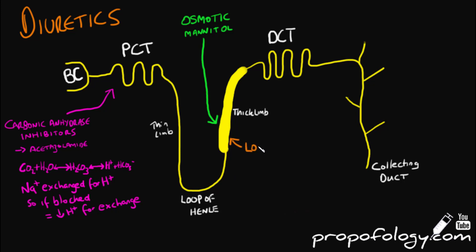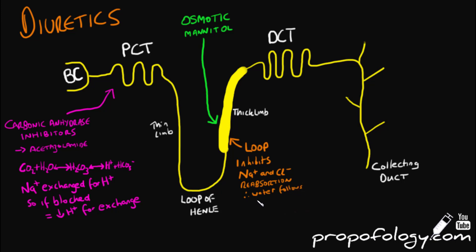Loop diuretics act mainly on the thick ascending limb of the loop of Henle, and less so early on in the distal convoluted tubule. They inhibit the reabsorption of sodium and chloride. This impairs the countercurrent multiplier system within the nephron, and the medulla becomes less hypertonic, so less water is absorbed. Once again, whenever sodium is left within the tube it will carry water with it and excrete it out.